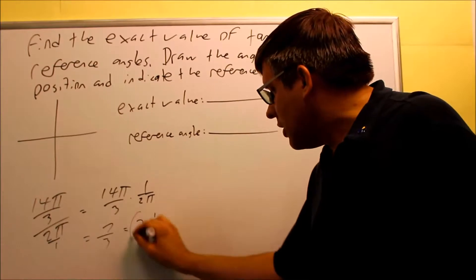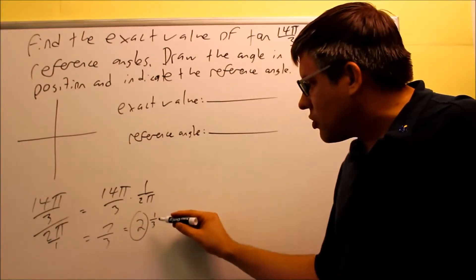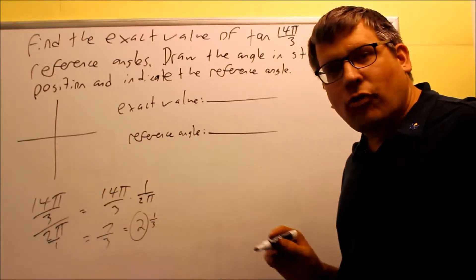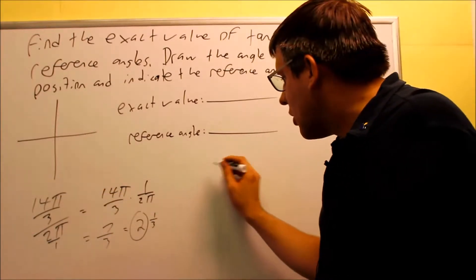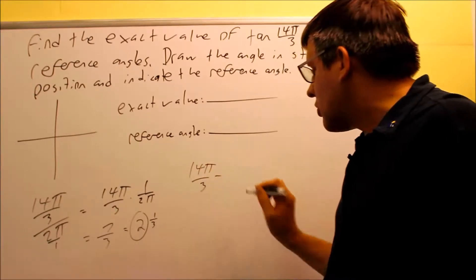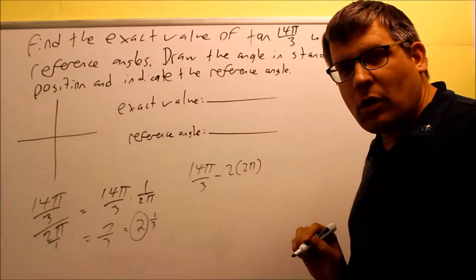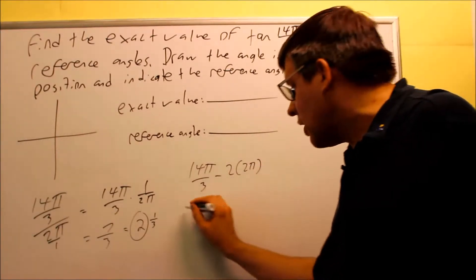I only care about this part. I know that there's 2 revolutions that go into 14π over 3. So what I can do is I'm going to take 14π over 3, I'm going to subtract 2 times 2π. I'm subtracting 2 revolutions from it and I want to find out what the remainder is going to be.